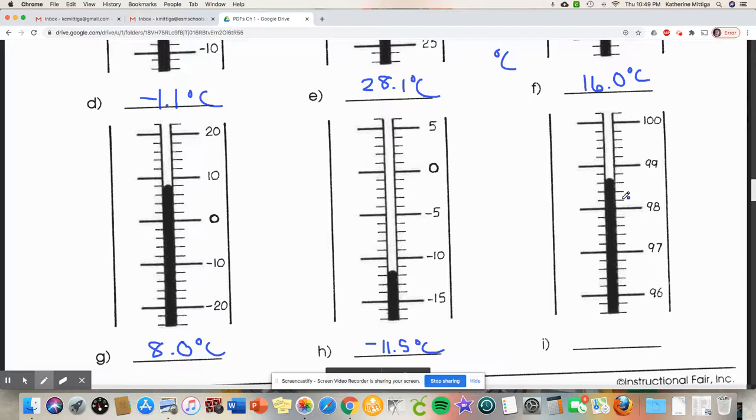Looks like 2, 4, 6, 8. Okay, these are going by 0.2s. So 98.2, 98.4, 98.6—no, it's just beyond. I'm going to say 98.7. So there we go, almost boiling if we had water.